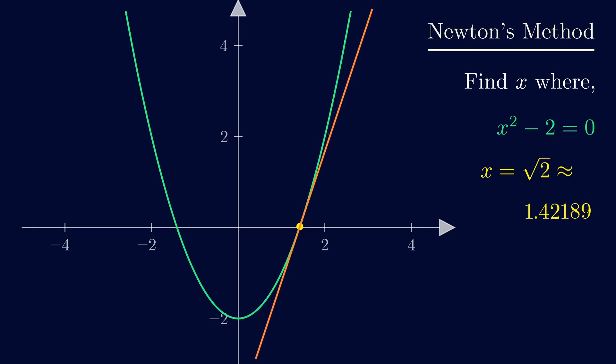It only takes a few iterations to converge to 1.4142, which is basically the decimal form of the square root of 2. Computers can use Newton's method to calculate square roots and other related functions very quickly.